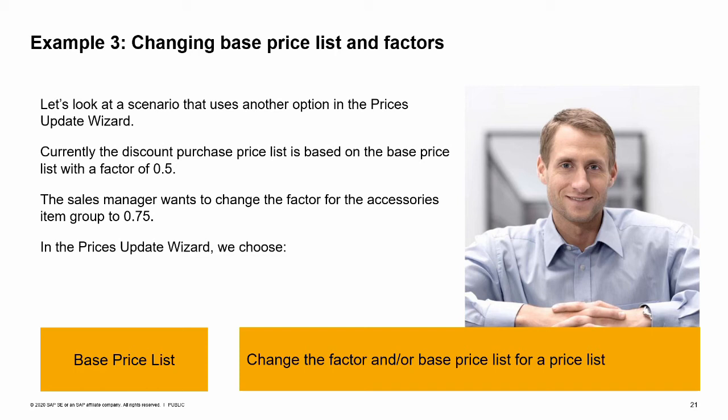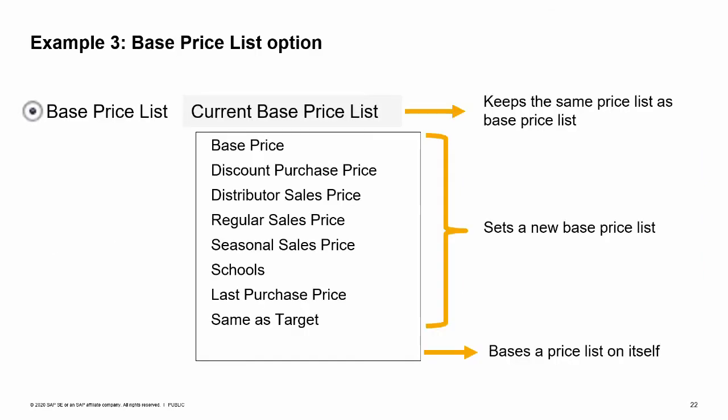Let's look at a scenario that uses another option in the prices update wizard. Currently the discount price list is based on the base price list with a factor of 0.5. The sales manager wants to change the factor for the accessories item group to 0.75. In the prices update wizard, we choose the option base price list. This option allows us the ability to change both the factor of a price list and, if we want, the price list that is used as a base price list. Once you choose the base price list option, you have the choice of both the current or a new base price list.